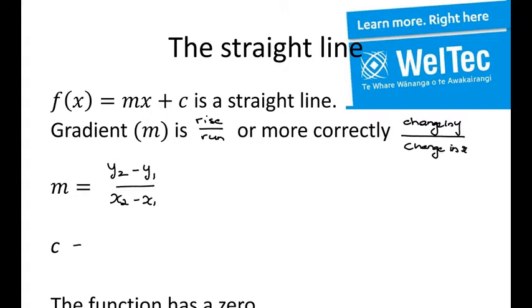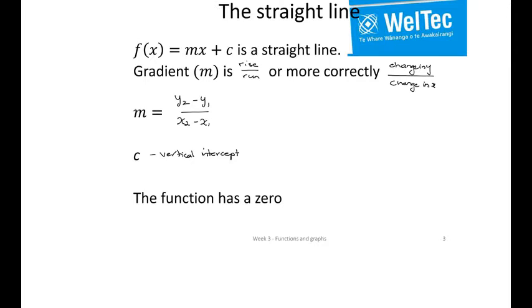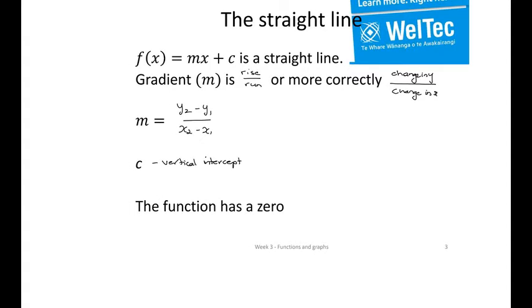C is the vertical intercept. And we say that the function has a zero, in other words where it crosses the x-axis. And we can work that out that it cuts there where x is equal to negative c over m, simply by rearranging the expression above.